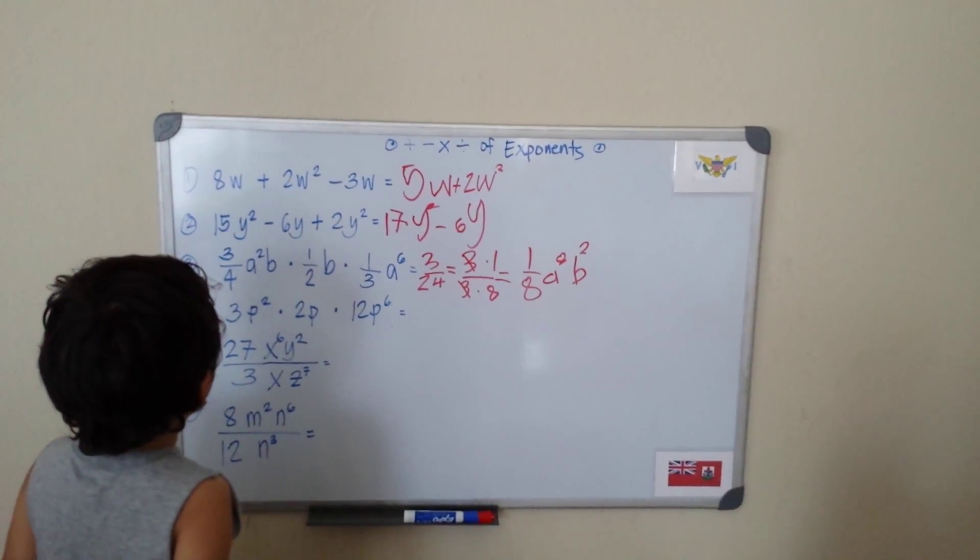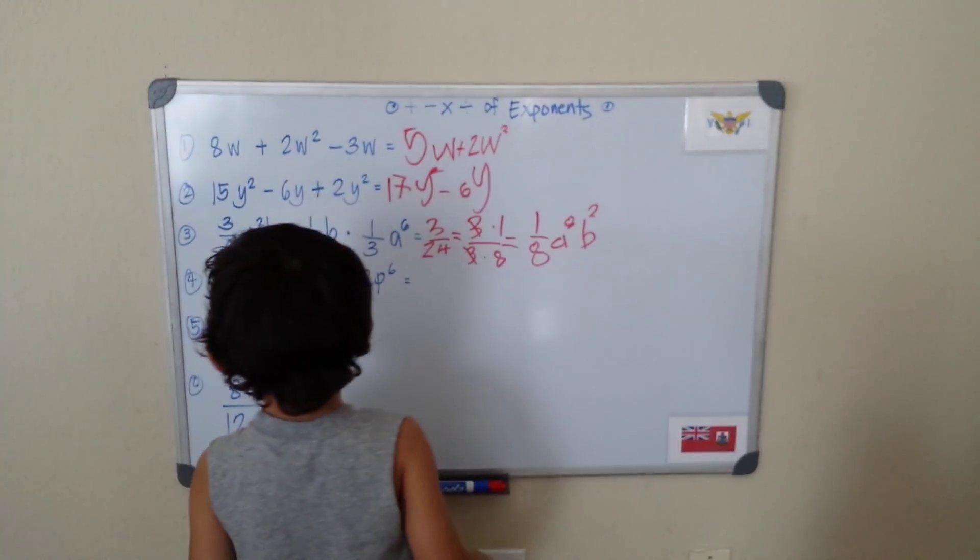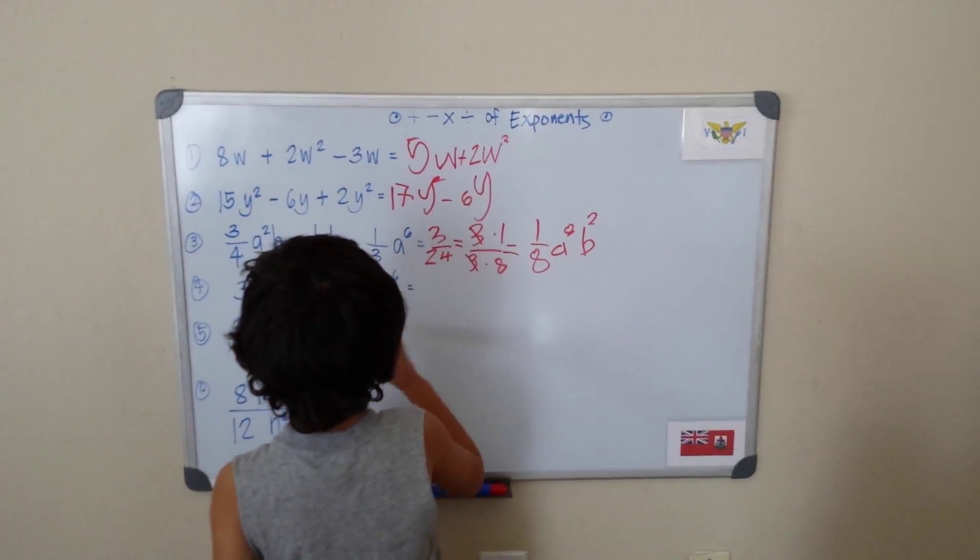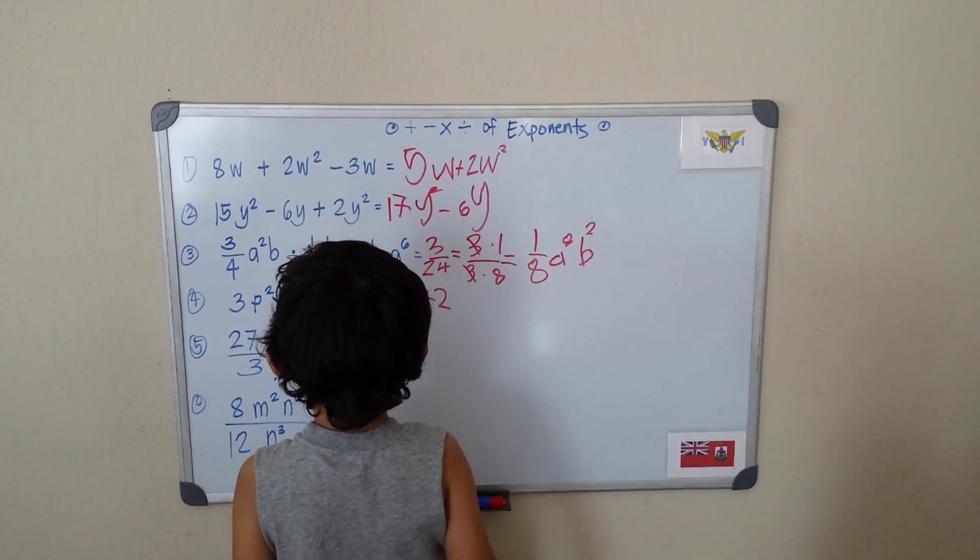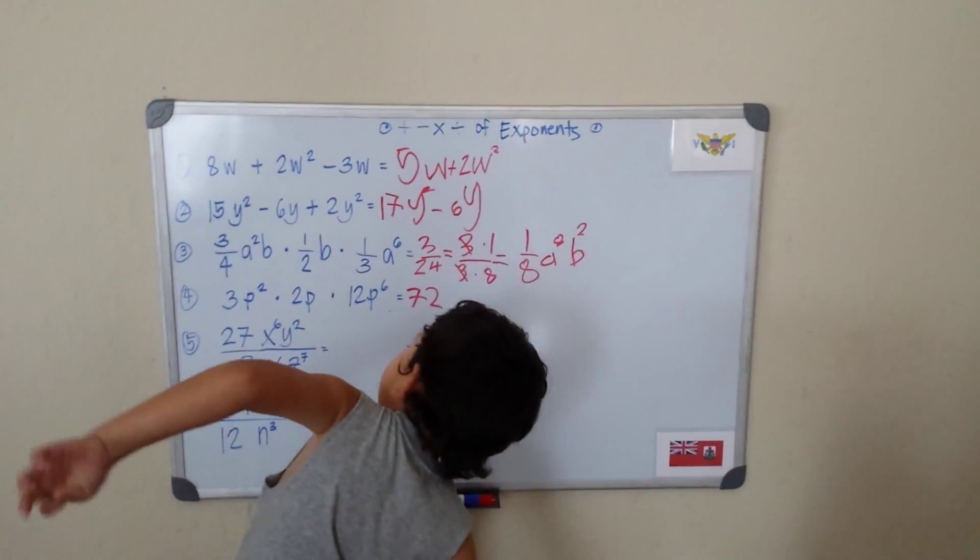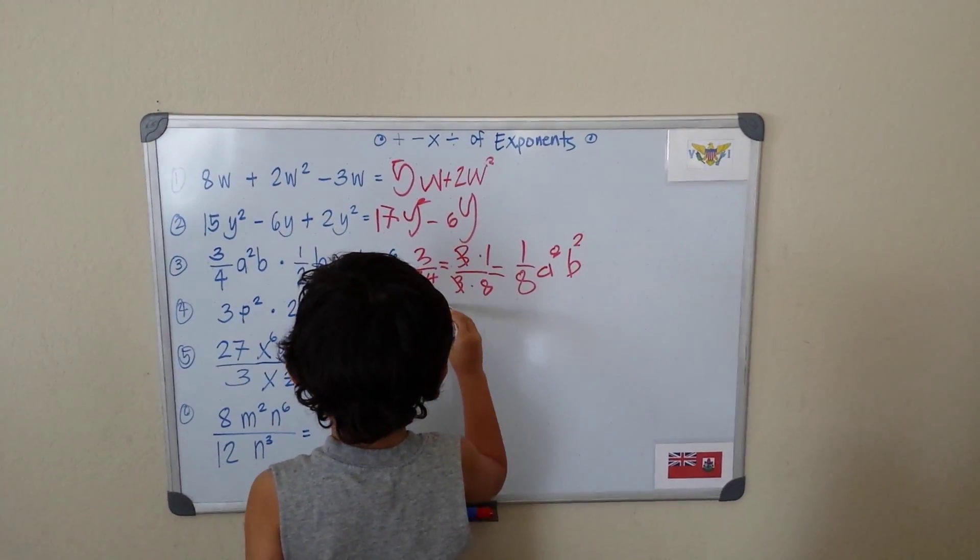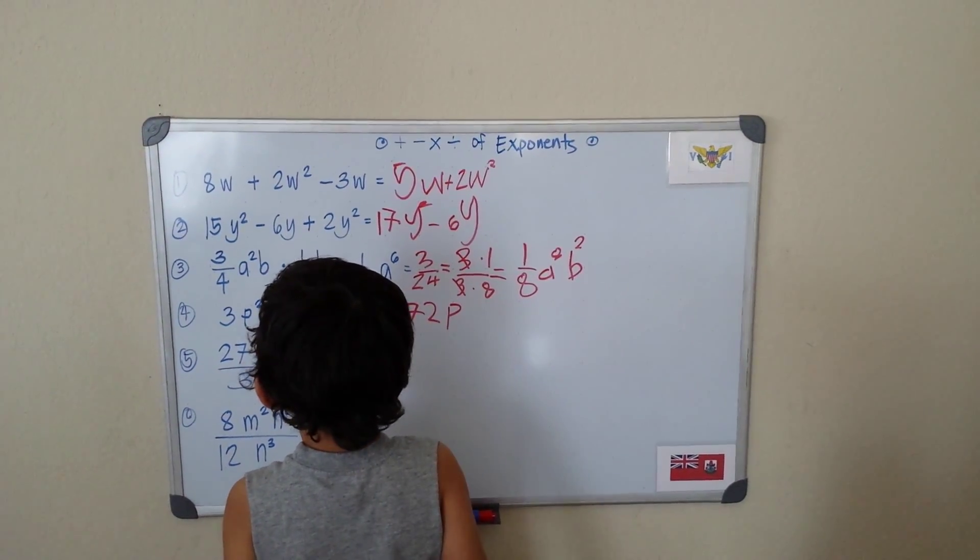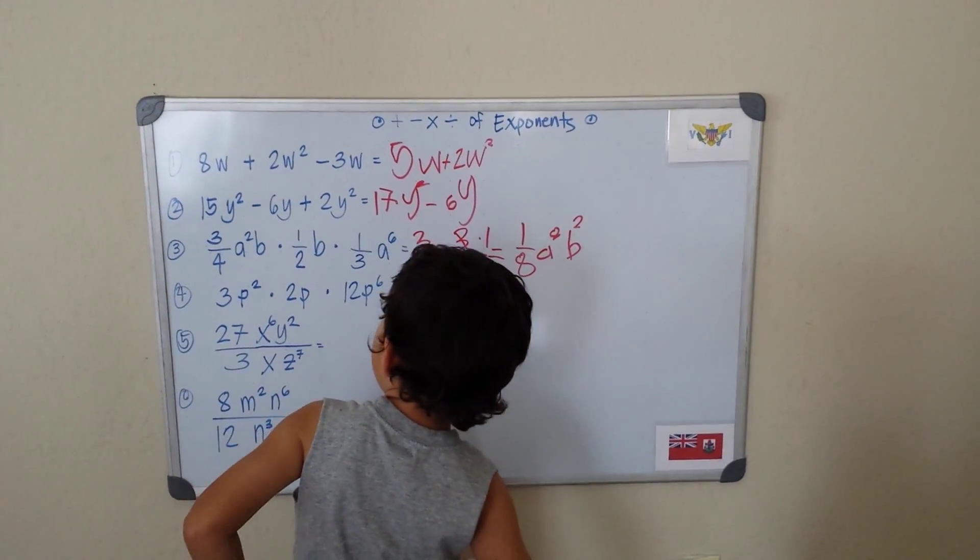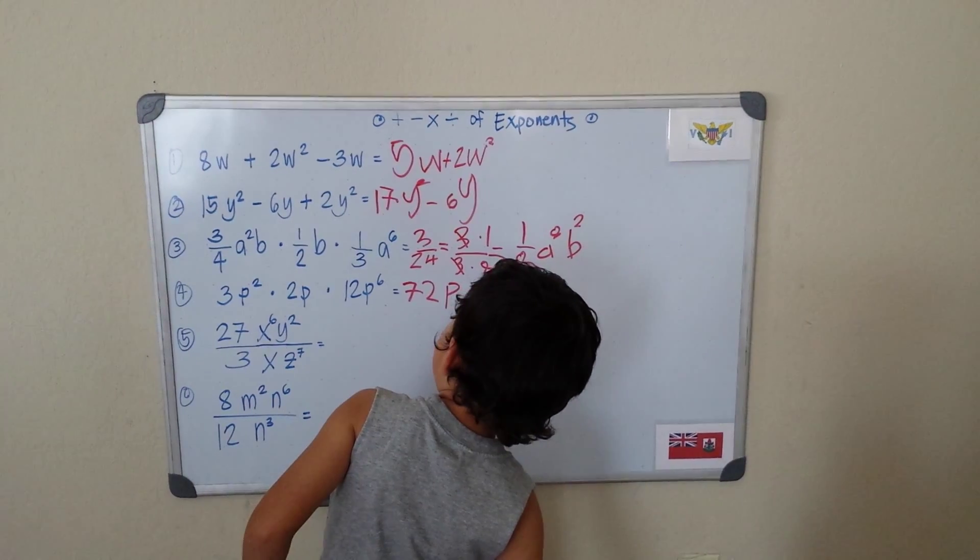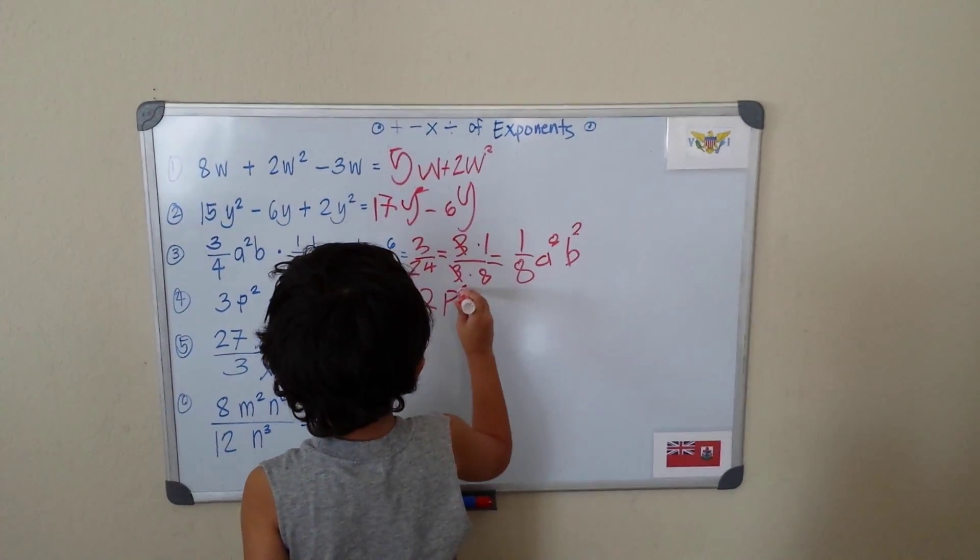Now let's make another one just like that. We can multiply 3 times 2, that's going to be 6 times 12. It's going to be 2. Then we look here, we can get our P over here. Let's see. 2 plus 1, 3 plus 6, that will give me 9 actually.